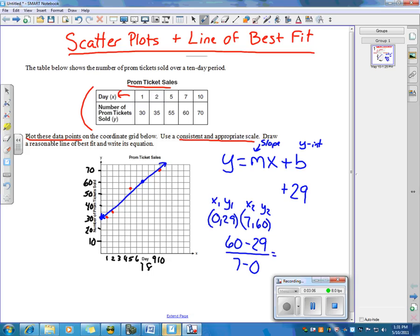That means we got 60 minus 29 over 7 minus 0, because I'm using the slope formula for this. If I simplify that, I'm going to get 31 over 7.